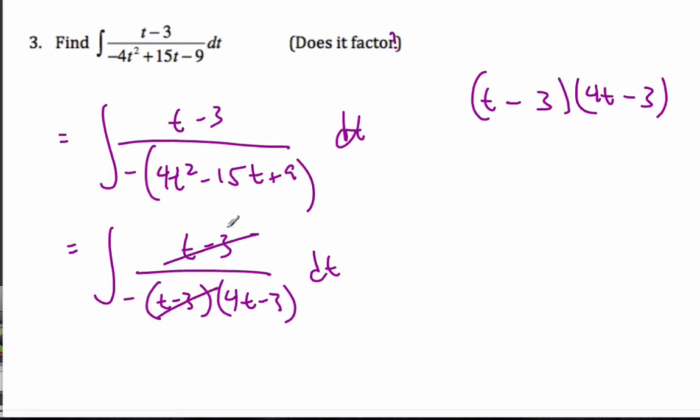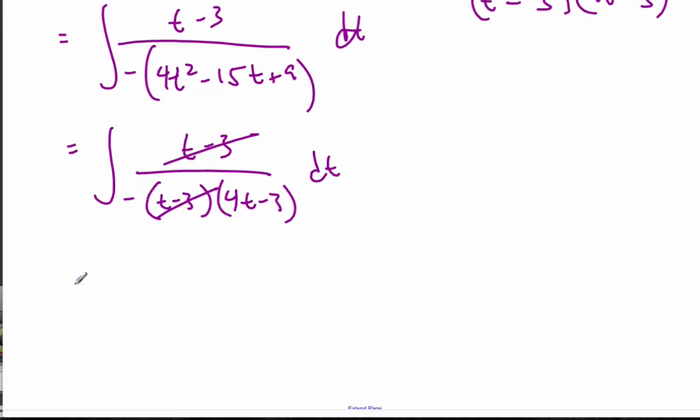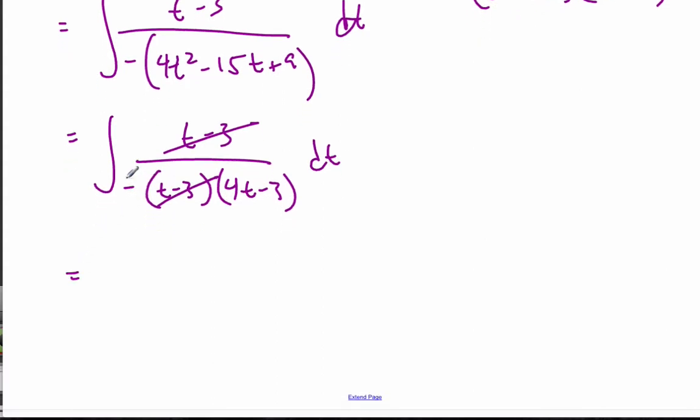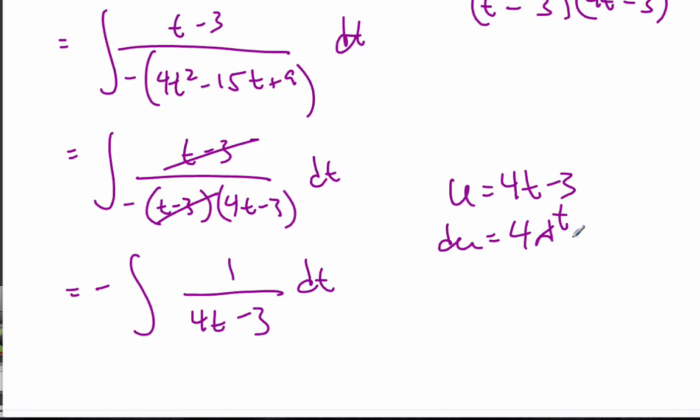Well, those cancel, happily so. And so now I have is equal to, let's pull the negative sign out, negative 1 over 4t minus 3 dt. And I can do a quick u substitution here. u is equal to 4t minus 3, du is 4 dt. So 1 quarter du is equal to dt.